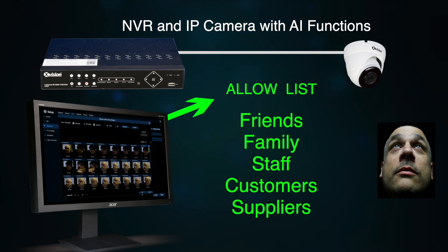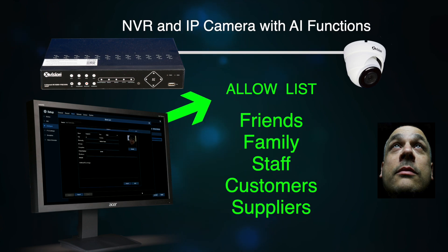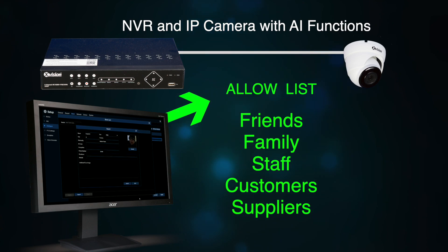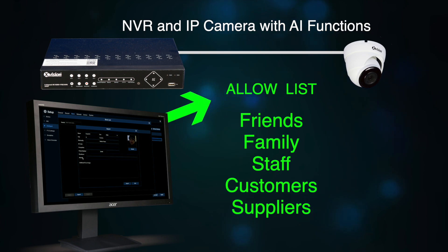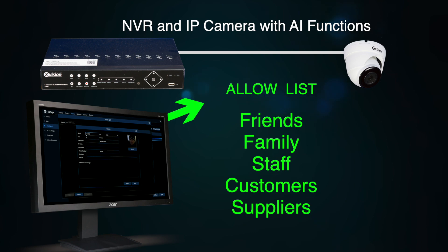Once the image has been added to the database, you decide whether it should be added to the allow list or the block list. The allow list is where you would put the people you are happy to be on your property — your family, your friends, your staff or visitors if you're a business, that sort of thing.